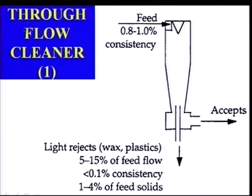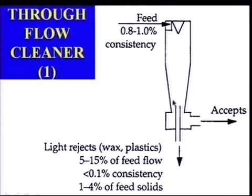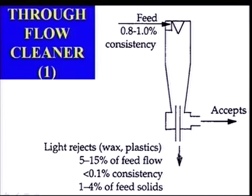Another type of reverse cleaner is the through-flow cleaner, also used to remove low-density contaminants. In this case, there is no overflow tube, so all flow goes down towards the conical end. Low-density material migrates towards the center, while high-density material and fibers go towards the wall. Fibers are collected from the periphery as accepts, and low-density material exits through the central tube as rejects. The advantage over the reverse cleaner is that the reject flow volume is relatively low, making the secondary stage much smaller.